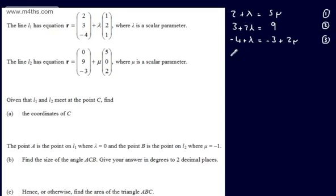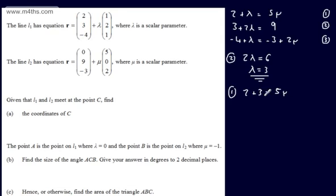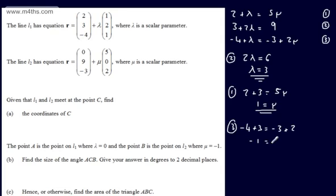Equation 2 is the easiest to solve. Subtracting 3 from both sides: 2λ = 6, so λ = 3. Substituting into equation 1: 2 + 3 = 5μ, giving 5 = 5μ, so μ = 1. We verify with equation 3: -4 + 3 = -1 and -3 + 2(1) = -1. Both sides equal -1, so the equations are consistent.